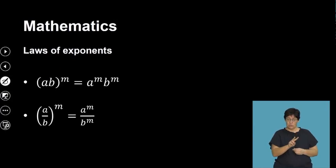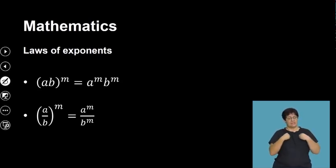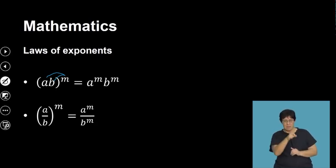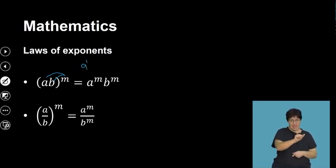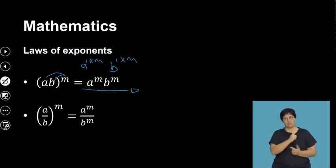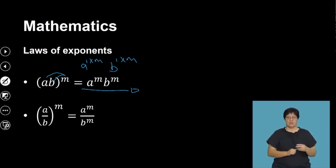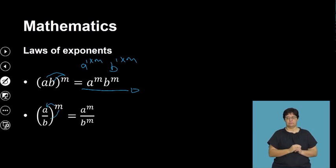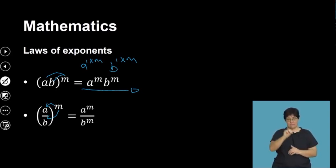Also, if I have two terms that I multiply inside a bracket raised to another exponent, we use the distributive property — we distribute the outer exponent to all terms inside. Remember, the absence of an exponent means it's 1, not 0. So (ab) to the m becomes a to the m multiplied by b to the m. Similarly, if it's a division inside the bracket, (a/b) to the m becomes a to the m divided by b to the m.